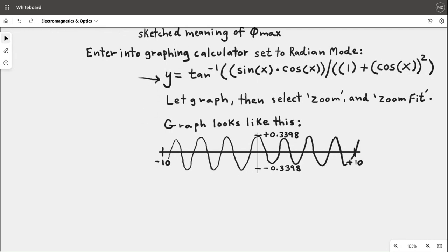You'll get an amplitude plus or minus 0.3398. You could use x limits of negative 10 to positive 10, because that should go from negative to positive infinity. You can just use plus or minus 10 on the x-axis. What you're looking for is that constant amplitude.